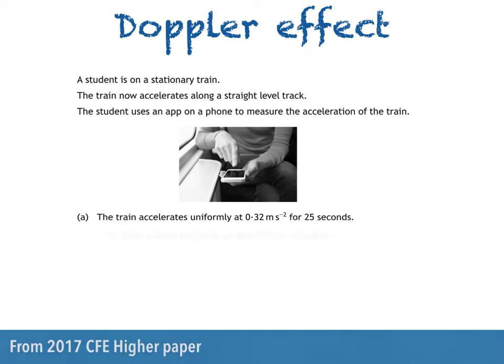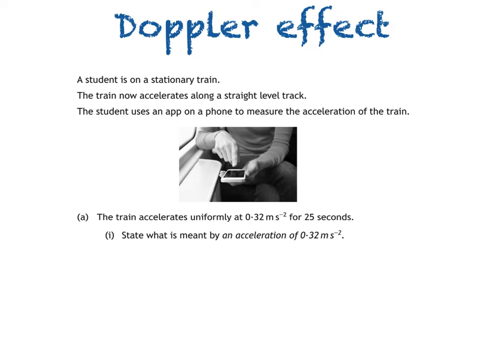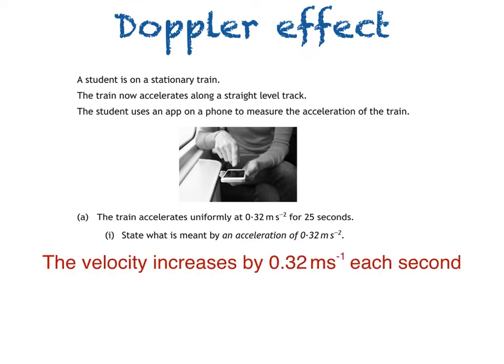We're then asked to state what's meant by the acceleration of 0.32 ms⁻². We could think of the equation for acceleration: v minus u is the change in velocity, and t is time in seconds. That means that an acceleration of 0.32 ms⁻² means that the velocity increases by 0.32 ms⁻¹ per second, each second.